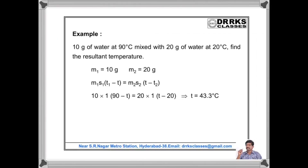Look at this example where 10 grams of water at 90°C is mixed with 20 grams of water at 20°C. Find the resultant temperature. We can use the simple principle of calorimetry: heat loss = M₁·S₁·(T₁ − T) = heat gained by the cold system. From this, you can find the resultant temperature.